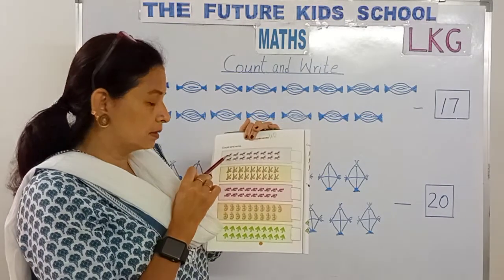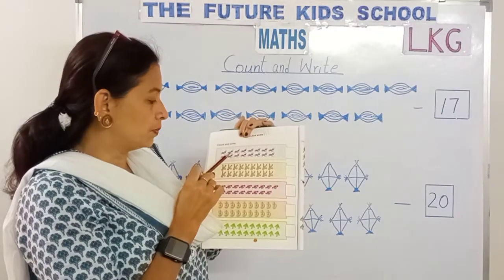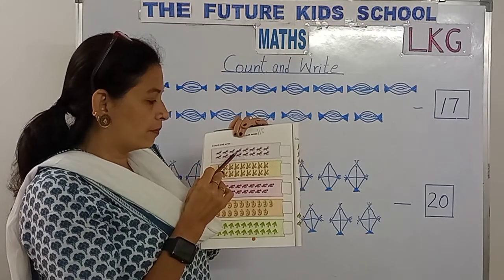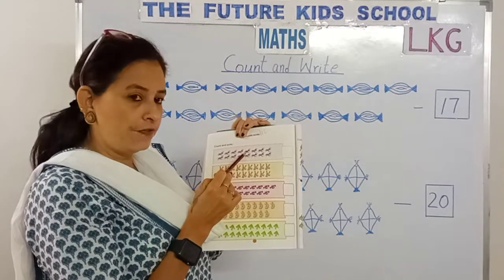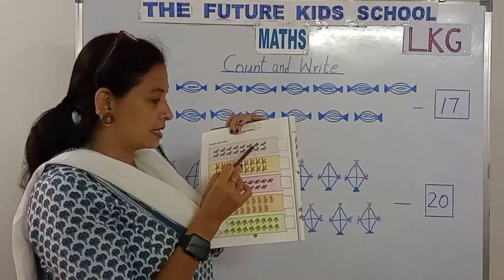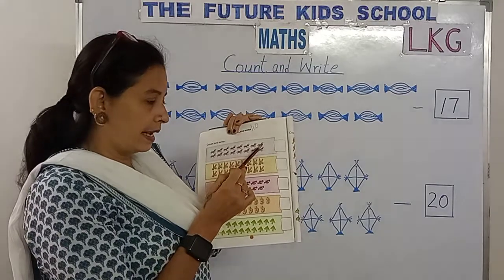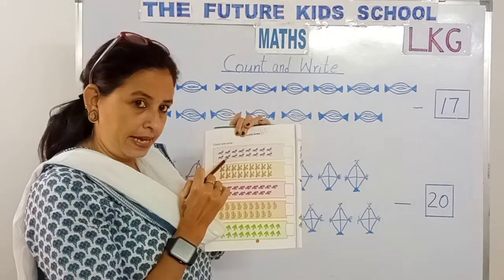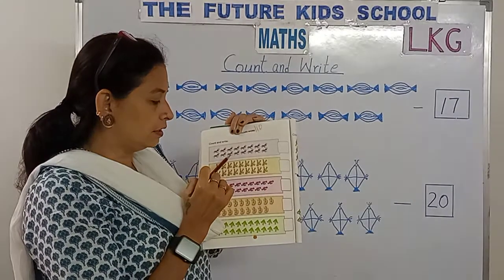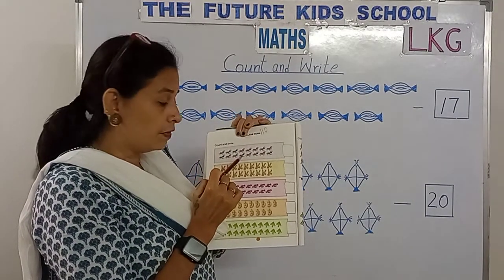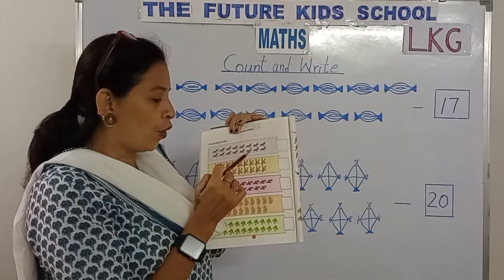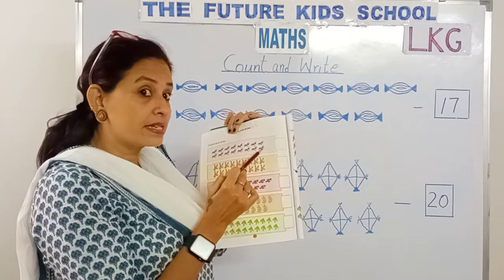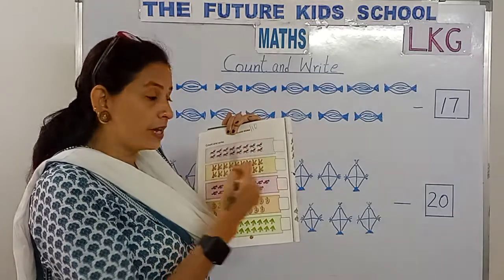1, 2, 3, 4, 5, 6, 7, 8, 9, 10, 11, 12, 13, 14, 15, 16. How many ants do we have here?